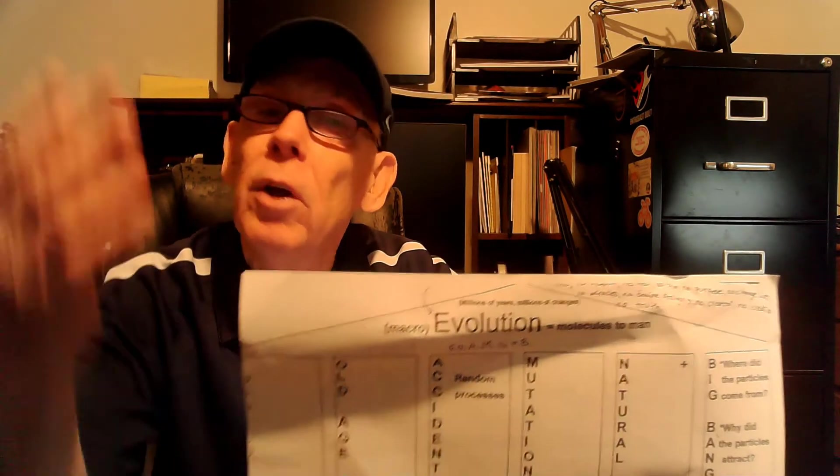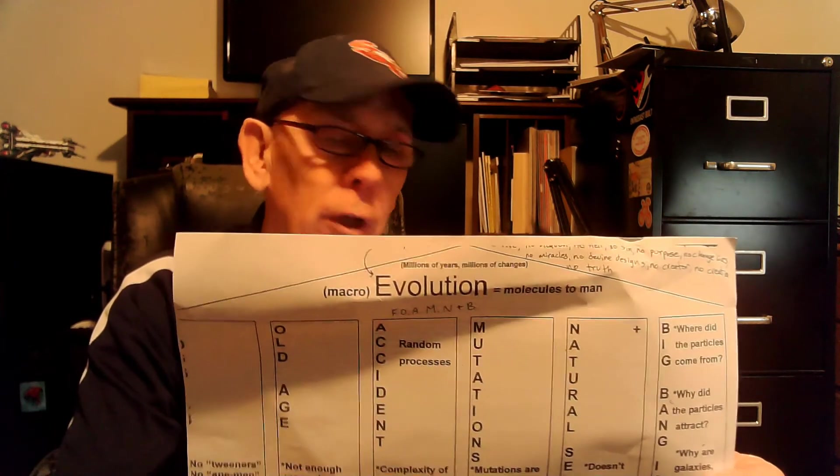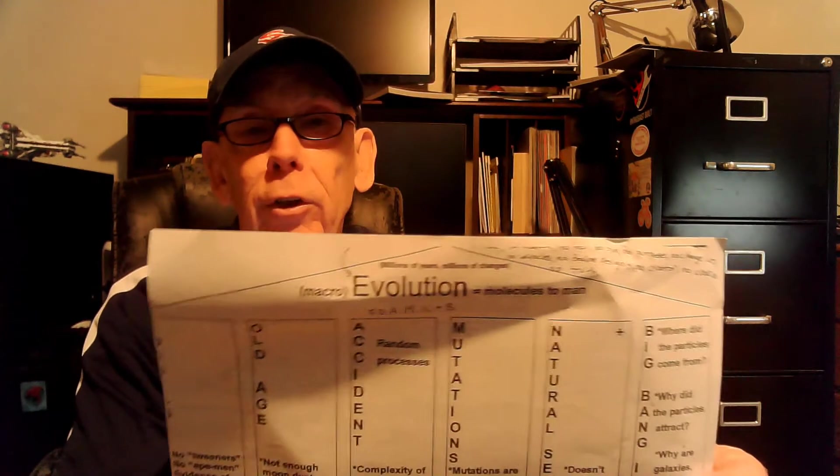Back to the list — I'm going to ask you these: the FOAM and pillars acronym. F for fossils, O for old age, A for accident, M for mutation, N for natural selection, and B for Big Bang. The evidence from the fossils: no tweeners, no ape-men. Evidence for a great global flood because all those animals, plants, and humans were buried rapidly under sediment. What do the fossils tell us? No evolution. Then old age — is it really billions of years? No. There's heaps of evidence it's only thousands.